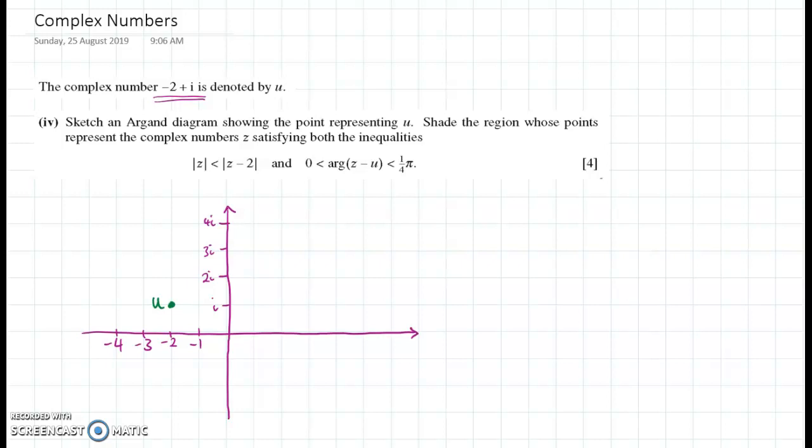Then we're asked to shade the region that satisfies these conditions down here. So let's take these one at a time. Let's first of all look at this bit here of the modulus of z is less than the modulus of z minus two.